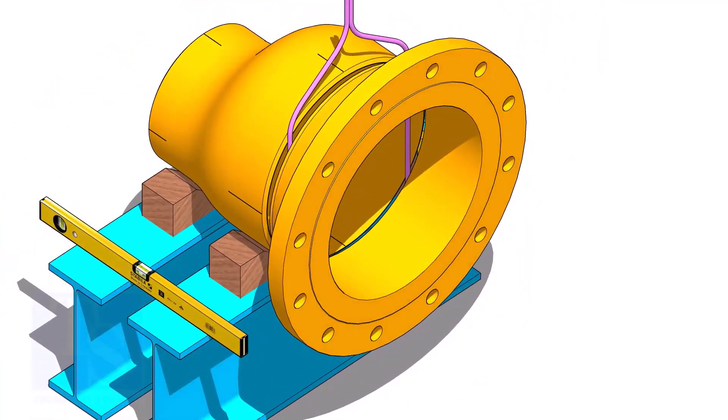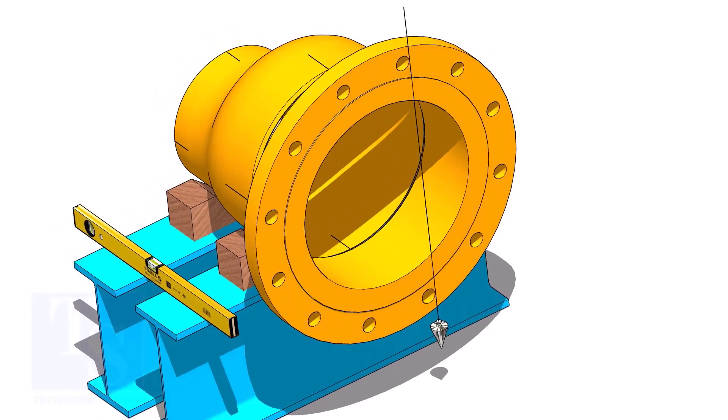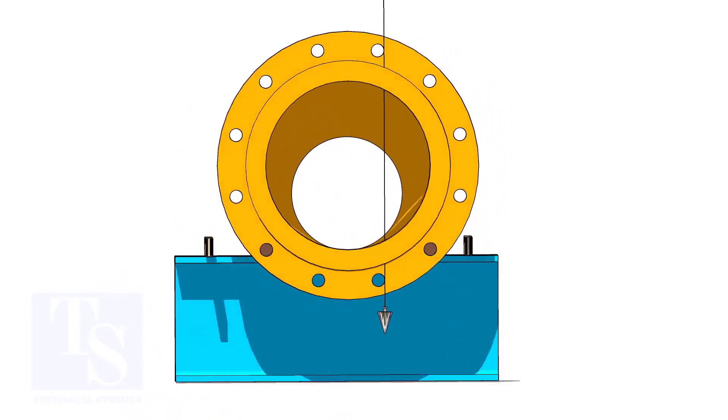Put flange in the gap rod. Arrange proper supports below the flange. Plumb the flange through the holes as shown.